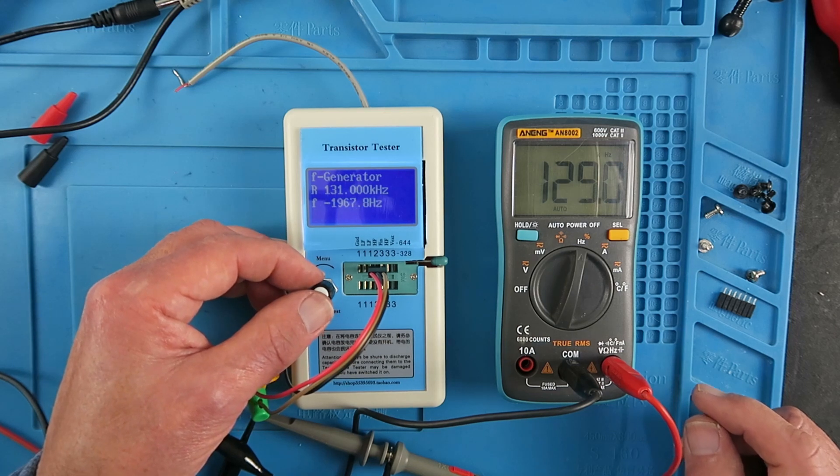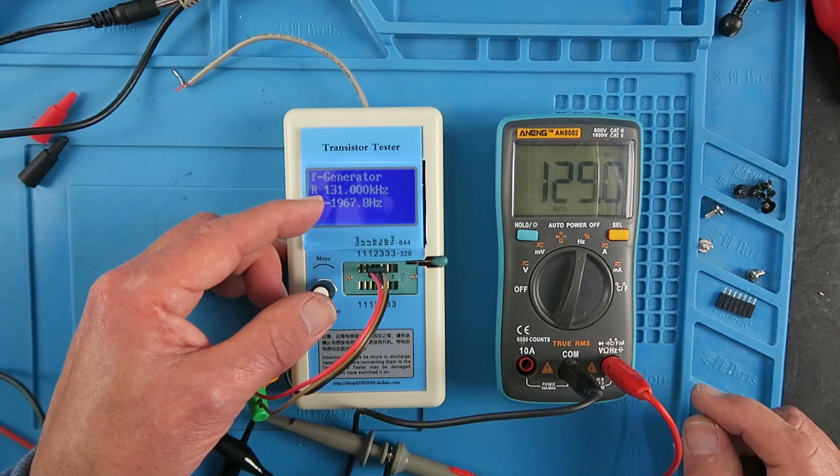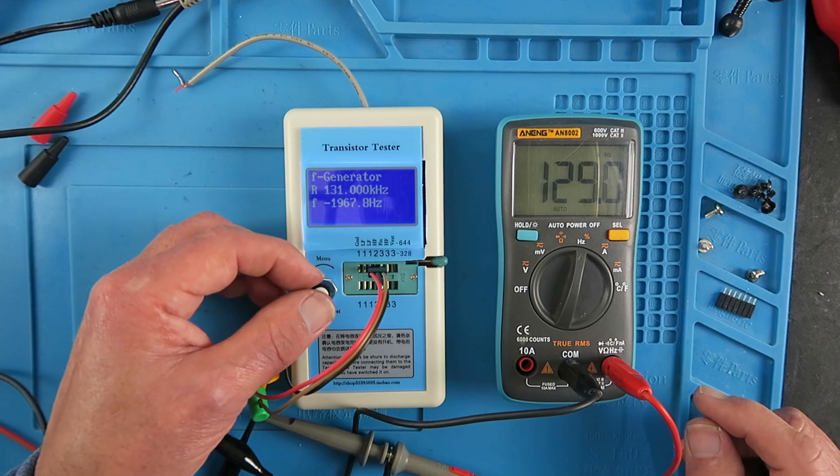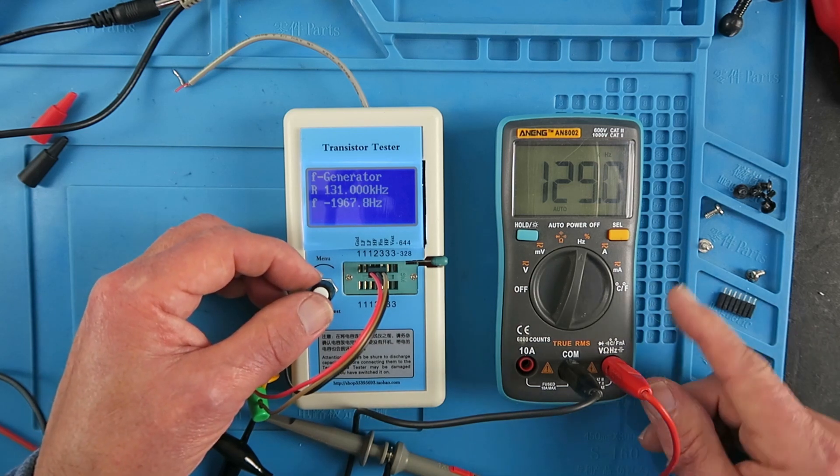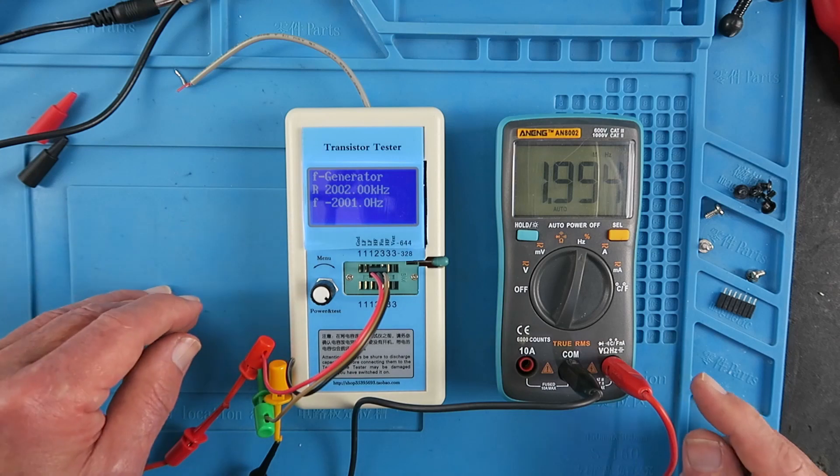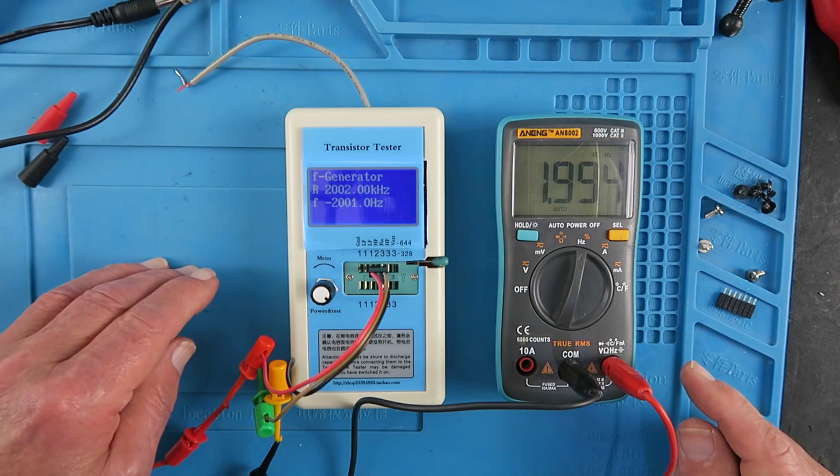Right, so now we're into the hundreds of kHz. So again, 131 minus 2000, 129 kHz. And the highest frequency that this can generate is 2 MHz.